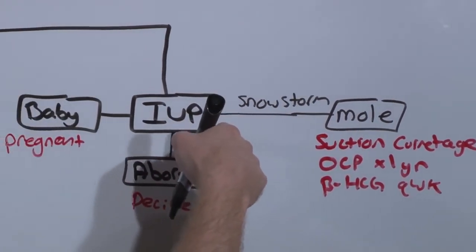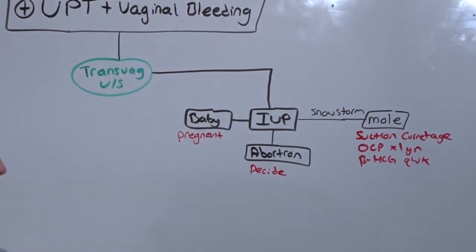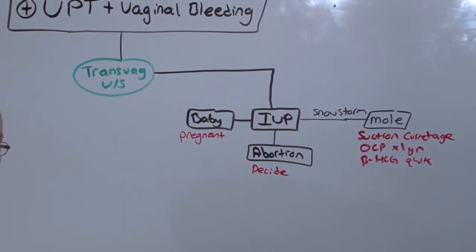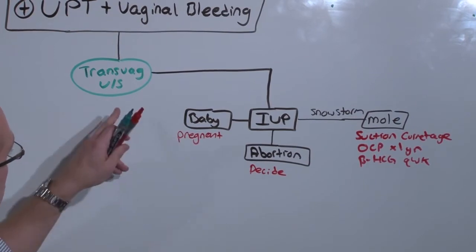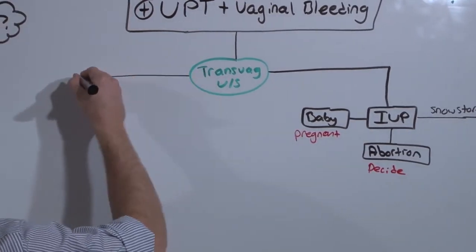So this is the best case scenario. You've got intrauterine pregnancy, baby's doing okay, and the vaginal bleeding is just a sign of being pregnant. That does happen. But what if you put a transvaginal ultrasound and you clearly see an ectopic?